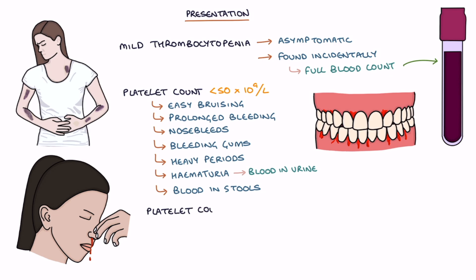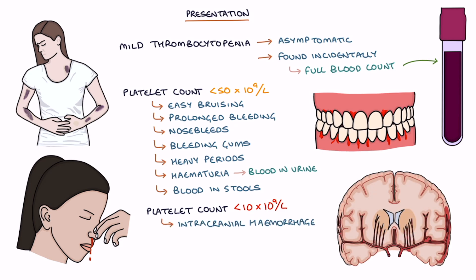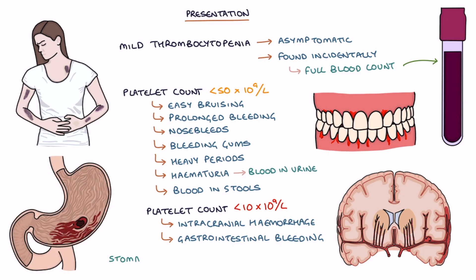Platelet counts below 10 times 10 to the power of 9 per litre are at high risk for spontaneous bleeding. Particularly concerning are intracranial hemorrhage, or bleeding in and around the brain, and gastrointestinal bleeding, for example, bleeding in the stomach.